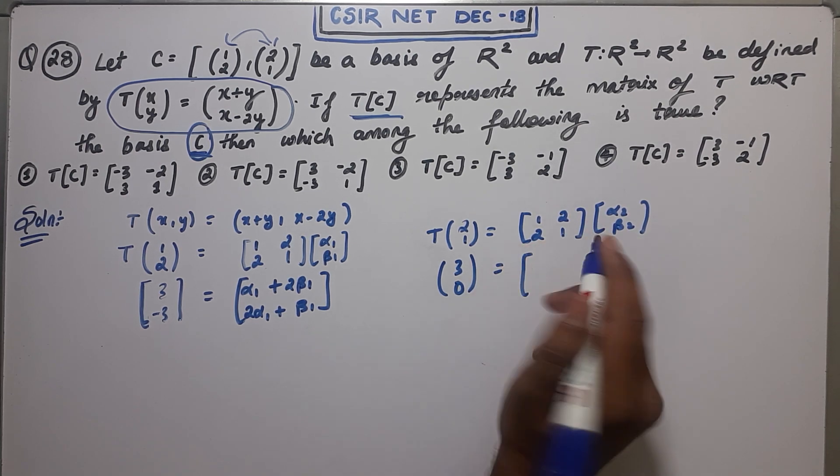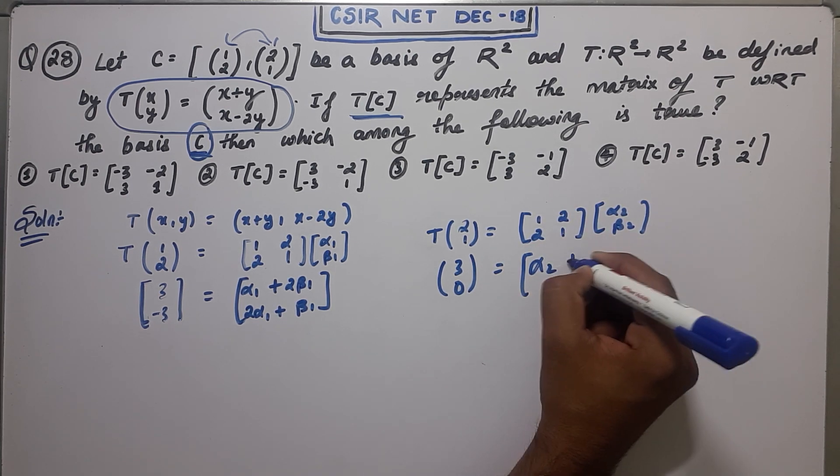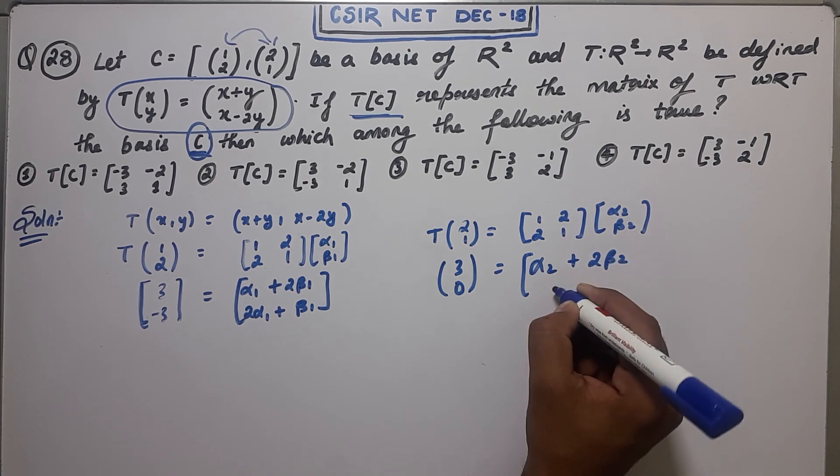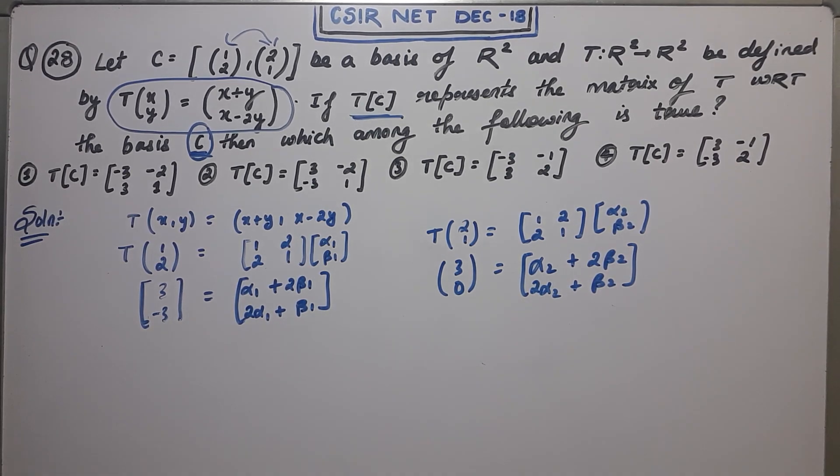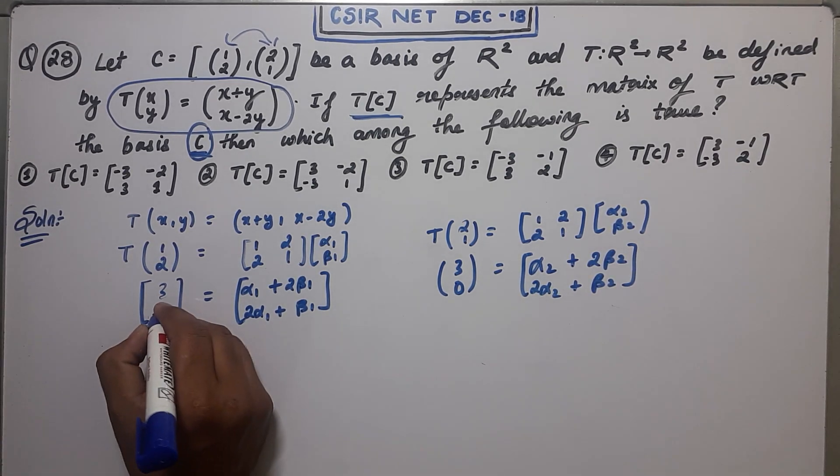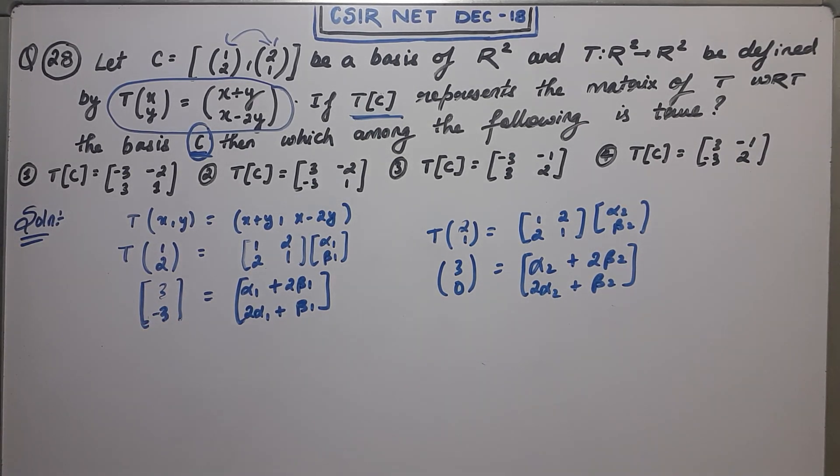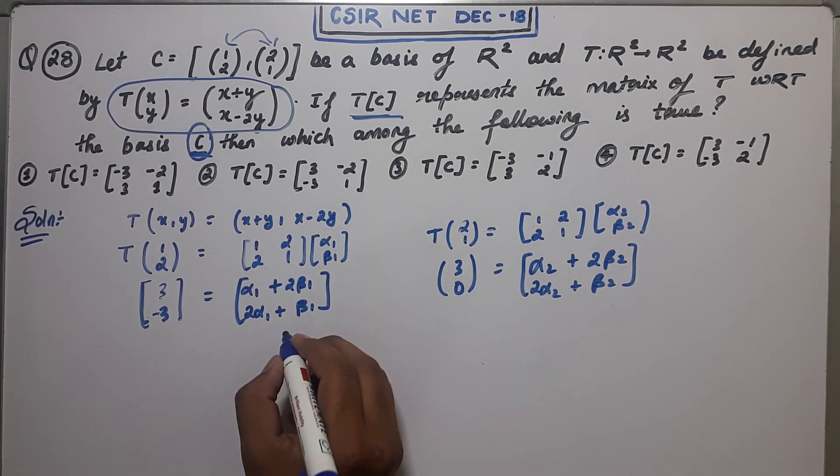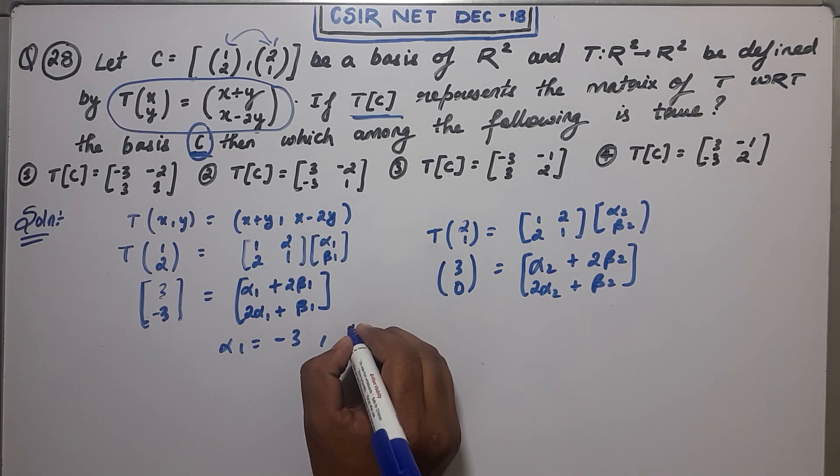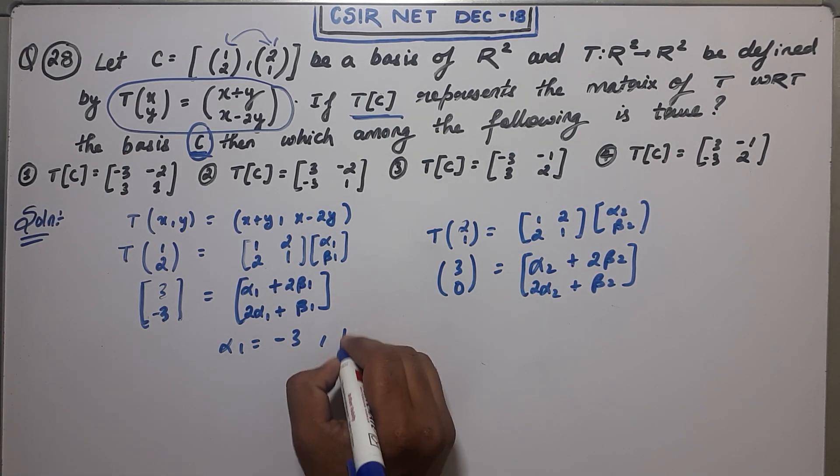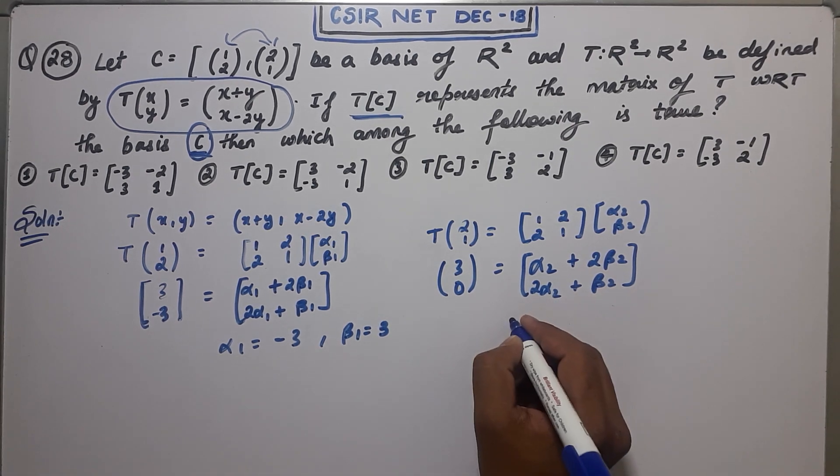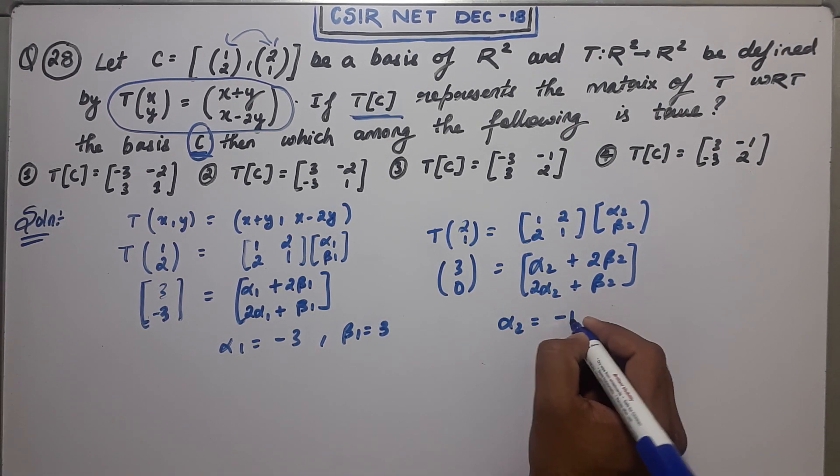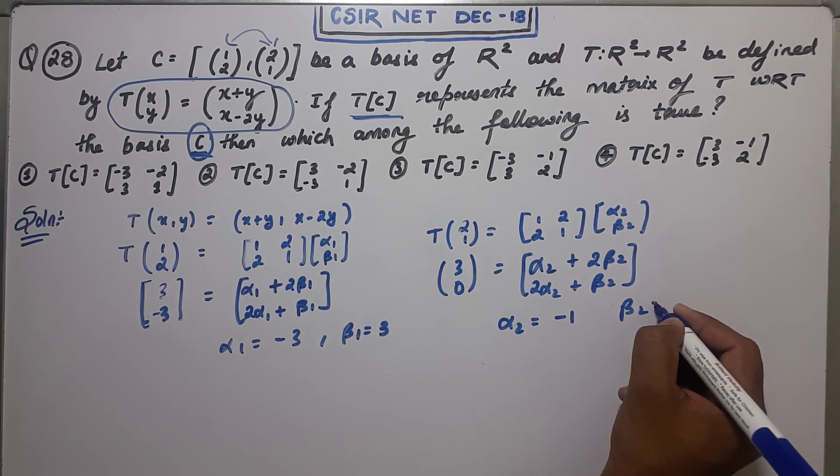You will get alpha 2 plus 2 beta 2, 2 alpha 2 plus beta 2. So this is the system that you have to solve. After solving this, what you are going to get? You will get alpha 1 as -3 and beta 1 as 3. Now from this system, you will get alpha 2 as -1 and beta 2 as 2.